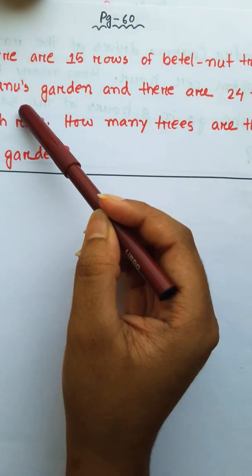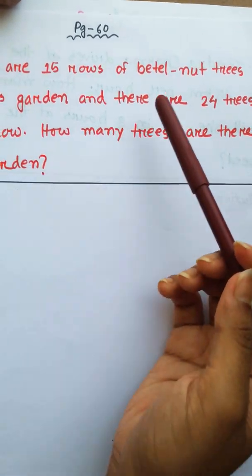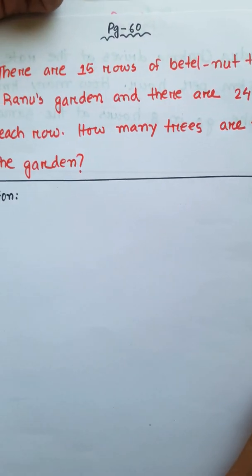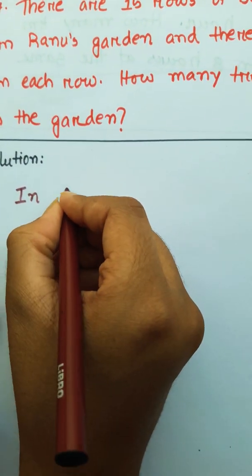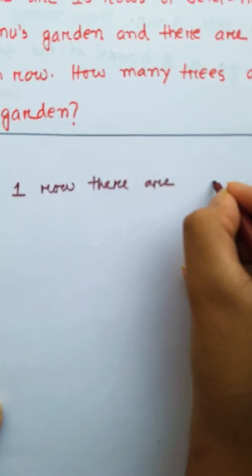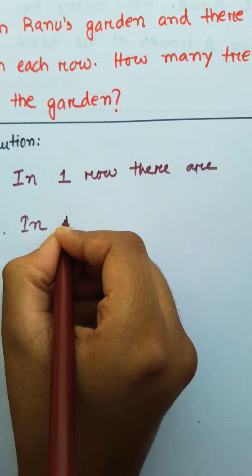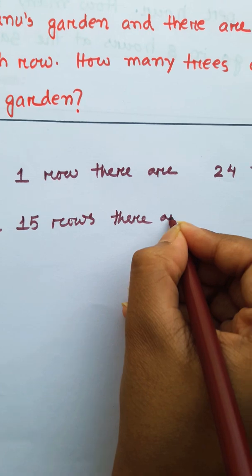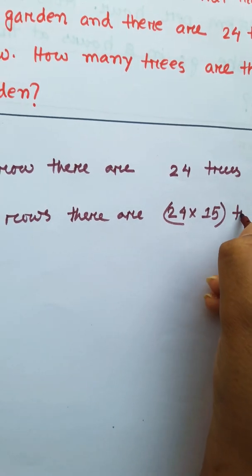The next problem: there are 15 rows of trees in Ranul's garden and there are 24 trees in each row. How many trees are there in the garden? In one row there are 24 trees. Therefore, in 15 rows there are 24 x 15 trees.